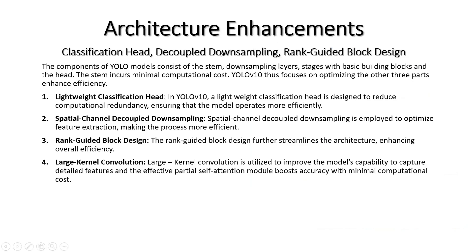Regarding architecture enhancements in YOLO V10: traditionally, YOLO model components consist of the stem, downsampling layers, stages with basic building blocks, and the head. YOLO V10 focuses on optimizing these parts to enhance efficiency. It introduces a lightweight classification head to reduce computational dependency, spatial-channel decoupled downsampling to optimize feature extraction, a rank-guided block design to streamline the architecture, large kernel convolution to improve the model's capability to capture detailed vision, and an effective partial separation module to boost accuracy with minimal computational cost.